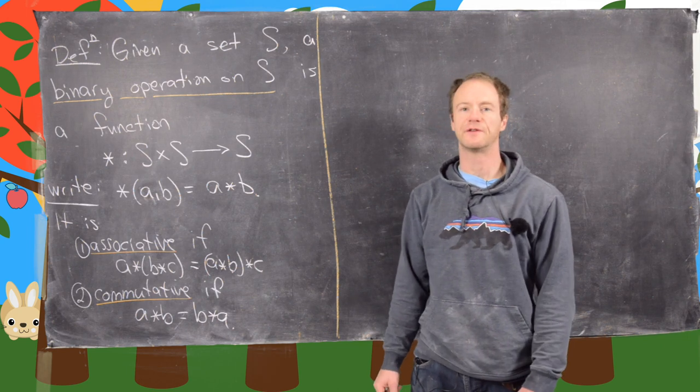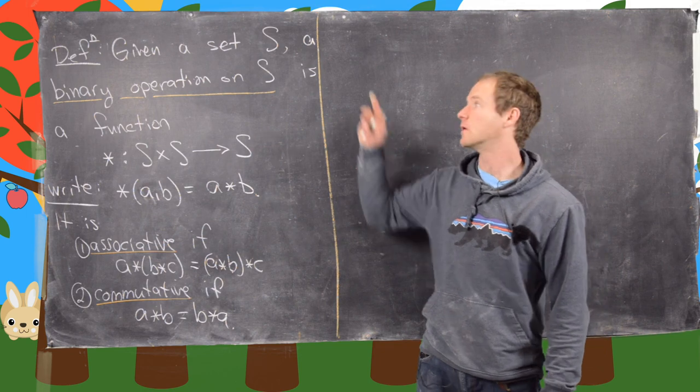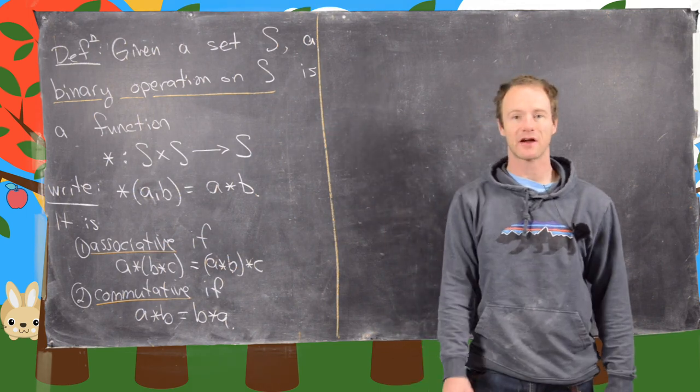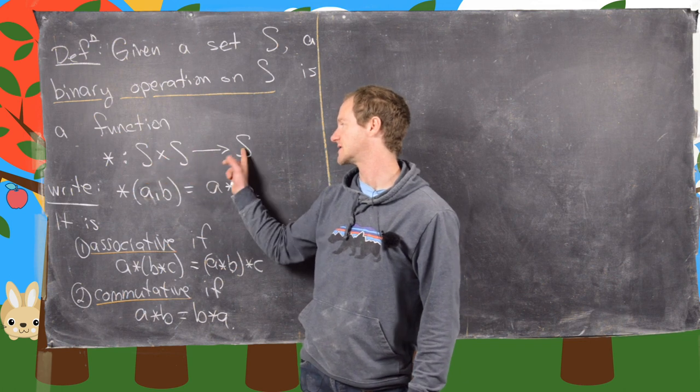In this video, we're going to look at the notion of a binary operation on a set S. So given a set S, a binary operation is a function from S cross S to S.